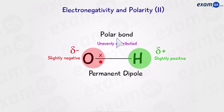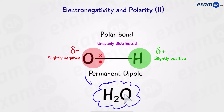The reason it's permanent is because the oxygen will always be the negative pole and the hydrogen atom will always be the positive pole. So let's say that this OH bond was part of a water molecule. Does this mean that water will also be a polar molecule?